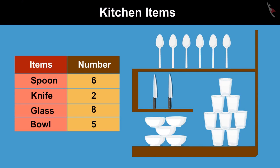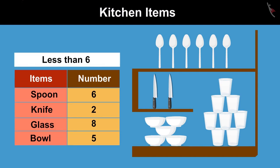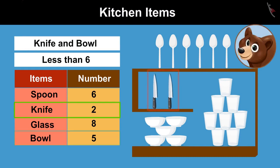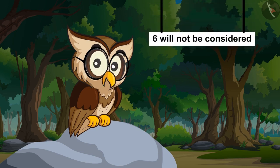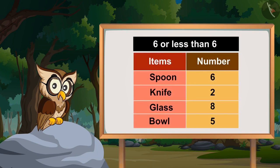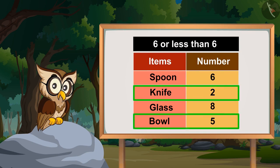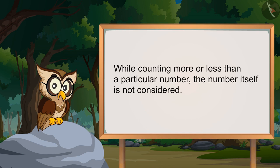So now can you tell me which kitchen item is less than 6 in number? Knife and bowl. Absolutely right! While counting less than a particular number, the number itself is not considered. Similarly, if we look at the numbers of items which are either 6 or less than 6 in the tabular form, we will get knife, bowl, and spoons.